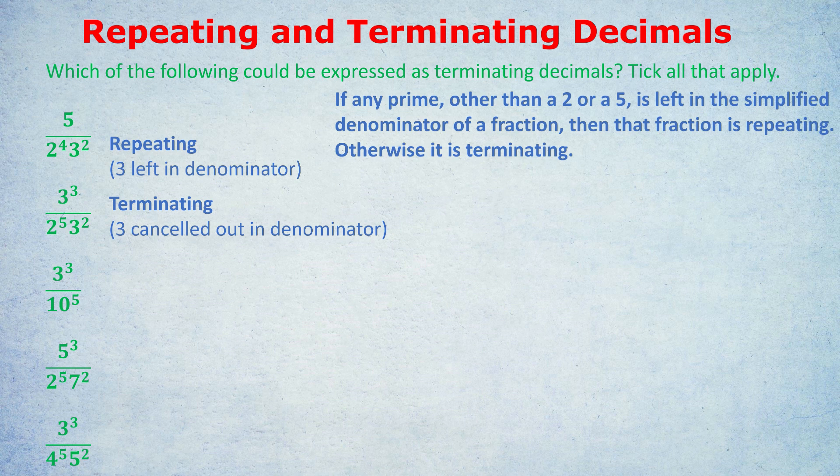What about the third one? What do you think? Well, it's a number other than 2 and 5, so isn't that a problem? No, because if you simplify this fraction, 10 to the power of 5 becomes 2 to the power of 5 times 5 to the power of 5. So 10 is made up of 2s and 5s, so it's fine. It's terminating. It will stop at a certain point.